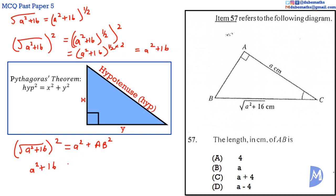So we have A squared plus 16 is equal to A squared plus AB squared. If A squared plus 16 equals A squared plus AB squared, it means that 16 equals AB squared.